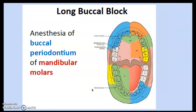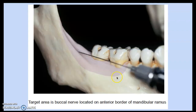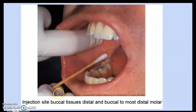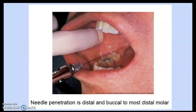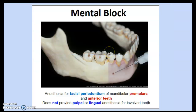The long buccal nerve block anesthetizes the buccal periodontium of the mandibular molars. The target area is on the anterior border of the mandibular ramus, parallel to the teeth. The injection site is the buccal tissue distal and buccal to the most distal molar, with needle penetration distal and buccal to that tooth.